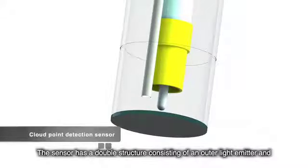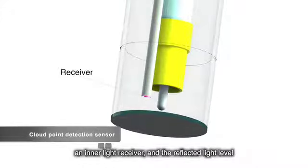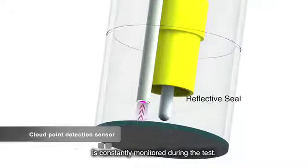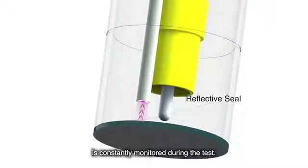The sensor has a double structure consisting of an outer light emitter and an inner light receiver, and the reflected light level is constantly monitored during the test.